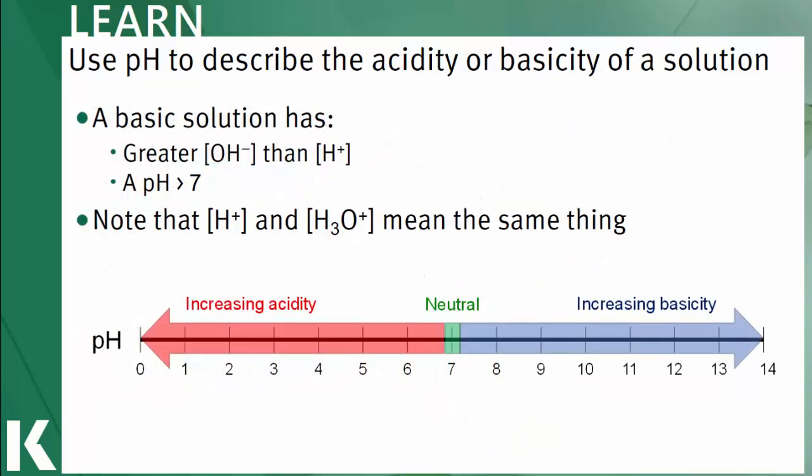Finally, a basic solution has way more hydroxide ions than hydrogen ions, so we're not balanced anymore. The pH of a basic solution will be greater than 7.